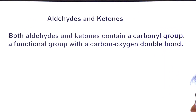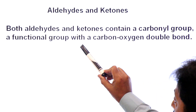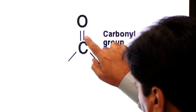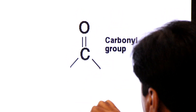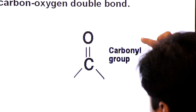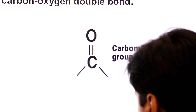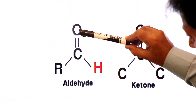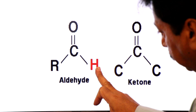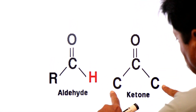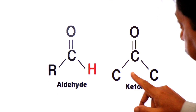Both aldehydes and ketones contain a carbonyl group — a functional group with a carbon-oxygen double bond. If the carbonyl group is bonded to at least one hydrogen atom, it forms an aldehyde. If the carbonyl group is bonded to two carbon atoms, it forms a ketone group.